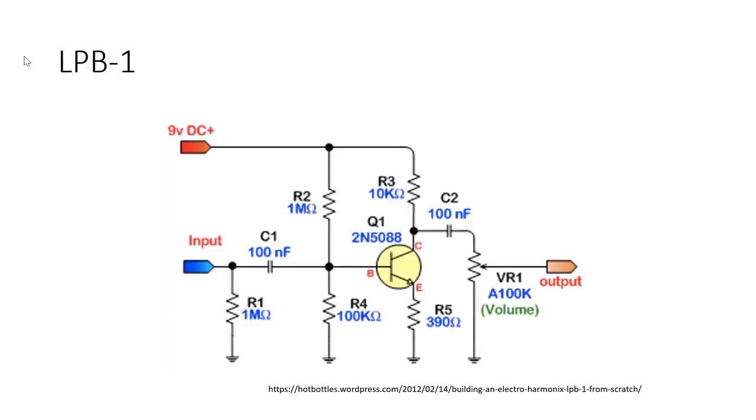The schematic of the LPB1 is shown here. The input initially sees a load resistance of 1 megaohm and a decoupling capacitor of 100 nanofarads. The base of the transistor is biased into class A operation using a 1 megaohm resistor placed between 9 volts and the base, and a 100 kilohm resistor placed between the base and ground.